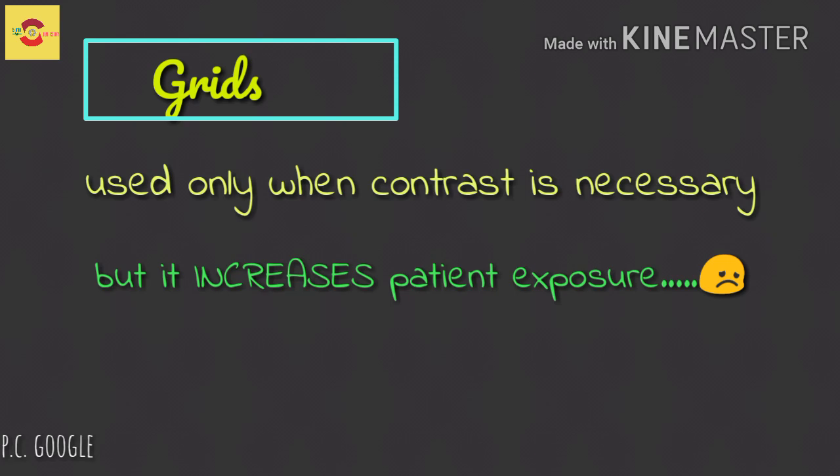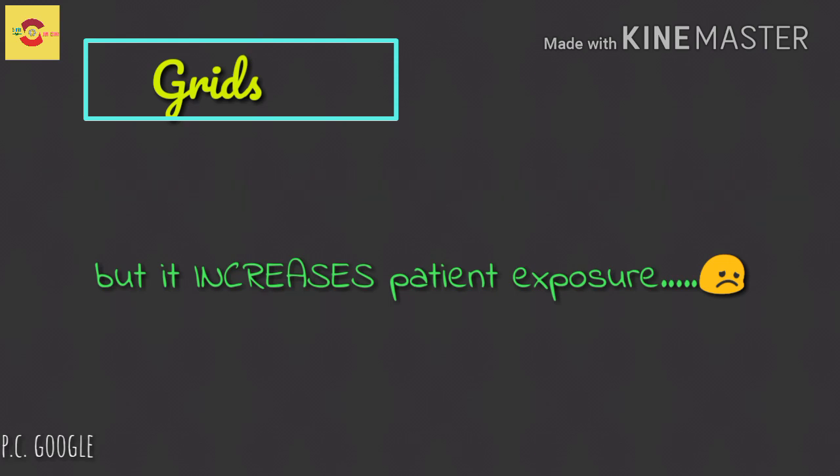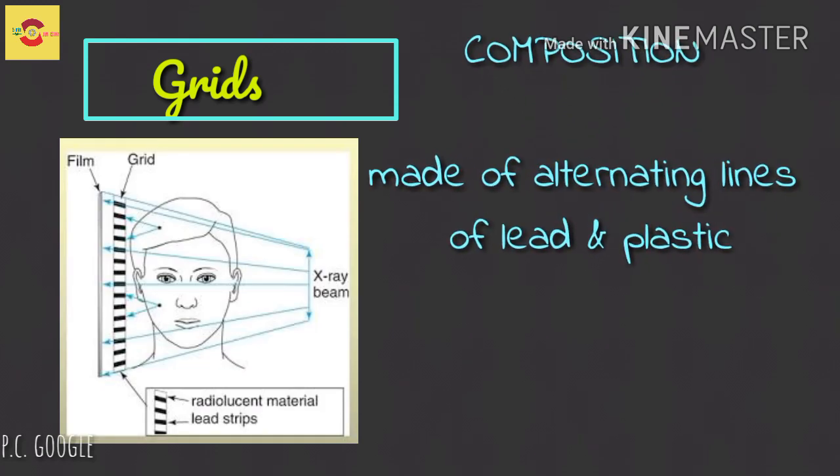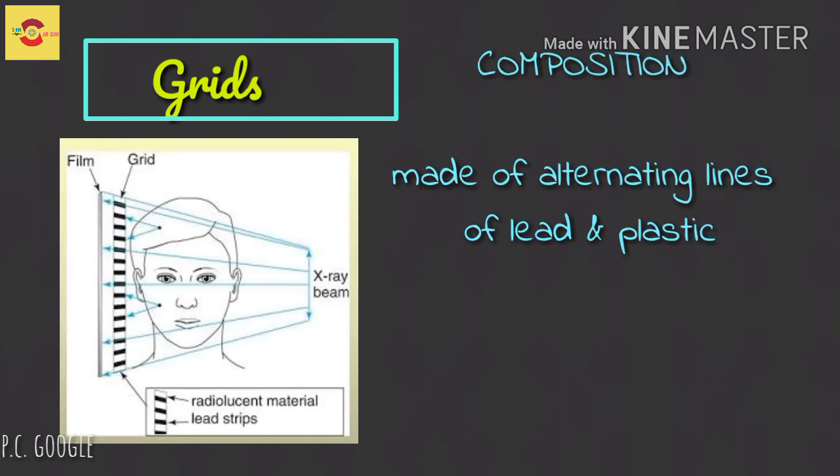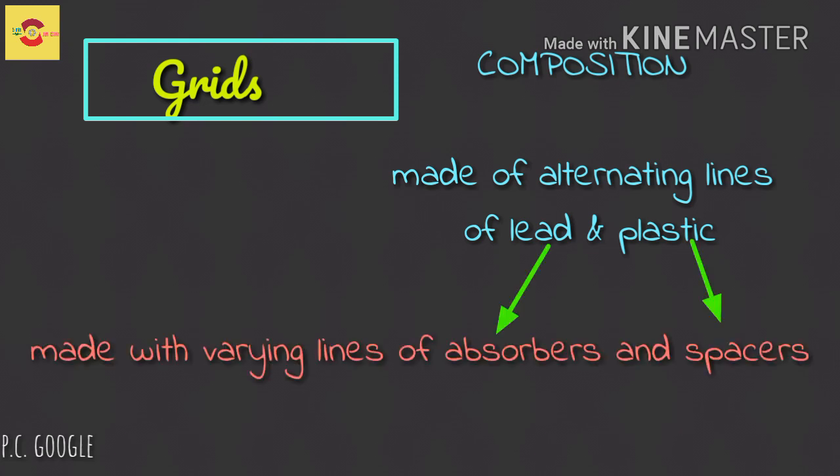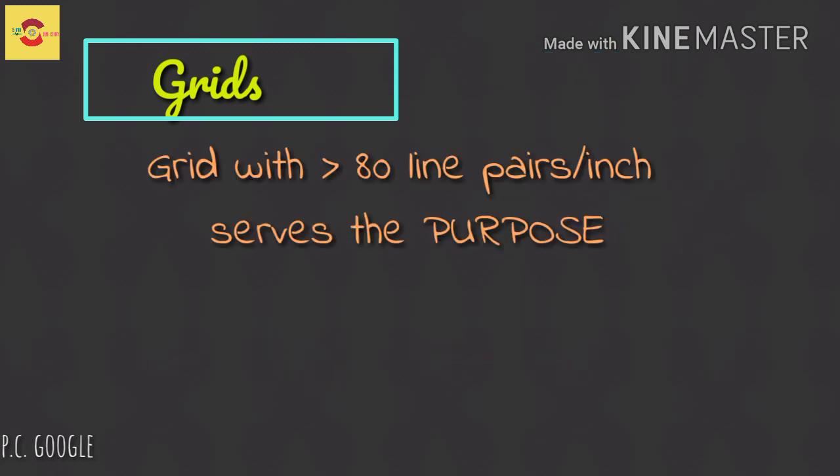What are they composed of? Grids are usually made of alternating strips of lead, which is radiopaque material, and plastic radiolucent material as spacers. Grids are made with varying numbers of pairs of spacer and absorber material for every square inch. Grids with 80 or more line pairs per inch do not show the black grid lines on the resultant image.